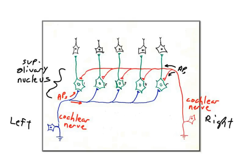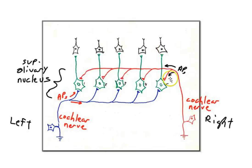Likewise, if the sound comes from the left, the left ear gets the head start, and those action potentials race all the way down to cell five by the time the right ear action potentials also reach cell five. Cell five gets simultaneous activity, representing sound at 90 degrees to the left, and a motor neuron turns your head to the left. The action potentials keep going, but none of the other cells get simultaneous input, so only cell five fires.